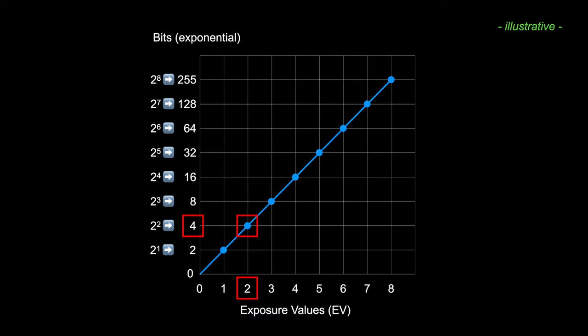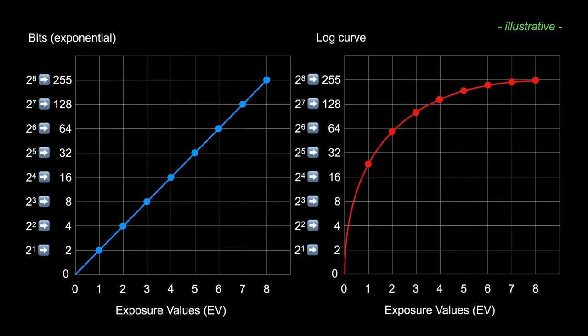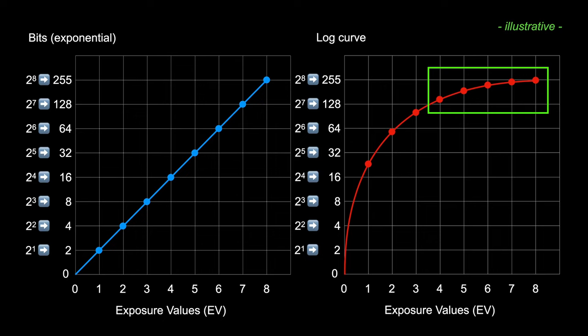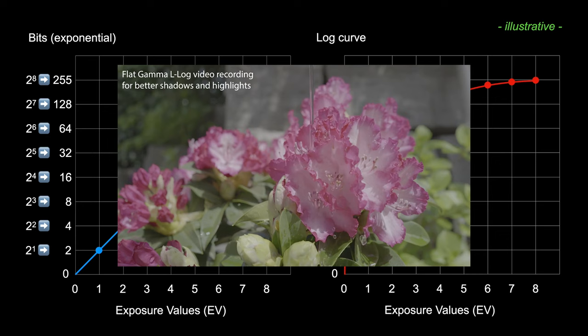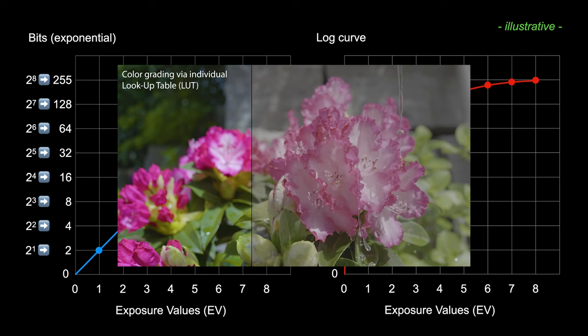To fix this, L-Log gamma transforms the straight linear curve into a logarithmic curve. In L-Log, at exposure value two you get about 64 bits of information in the dark areas — a huge improvement. The curve saturates and flattens from around EV four upward, where clipping would occur anyway. By transforming that linear curve into the logarithmic one, you gain a lot of dynamic range: you preserve information in shadows and recover more from highlights. The tradeoff is a very flat color profile that requires color grading in post.